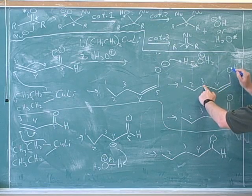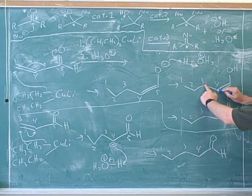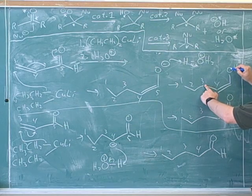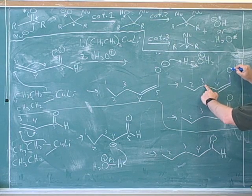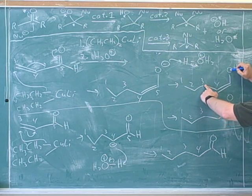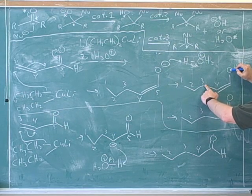And notice that these are 1, 2, 3, and 4. If we called this the number 1, this would be 2, this would be 3, and this would be 4. That's why this is called a 1,4 addition because the carbon that's attacked and the oxygen that gets protonated are in a 1,4 configuration with each other.